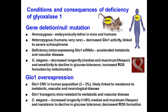Overexpression of glyoxalase 1 is expected in people who have increased glyoxalase 1 copy number. This is likely linked to resistance to metabolic, vascular, and neurological disease, although this is yet to be studied and confirmed.